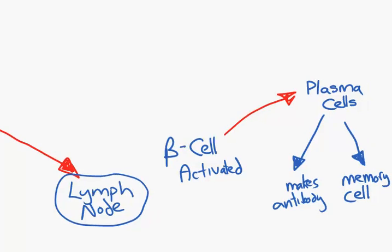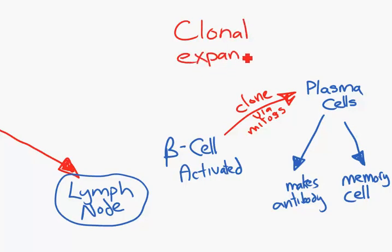This process in the lymph nodes where the B cells or B lymphocytes are activated and they clone and clone and clone via mitosis is called clonal expansion, because we're expanding the number of clones of the cells that can produce antibodies so that we make many of these. Clonal expansion. This is one of the words IB likes us to use.